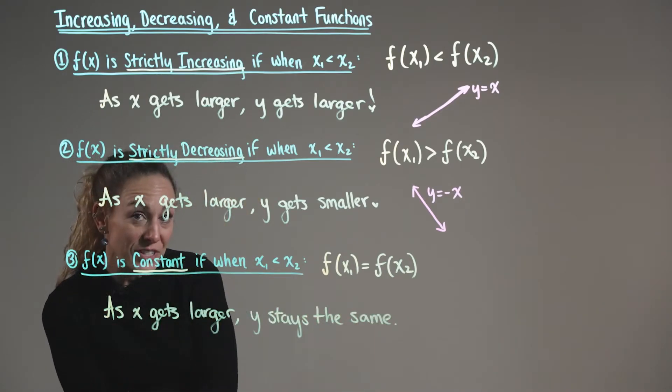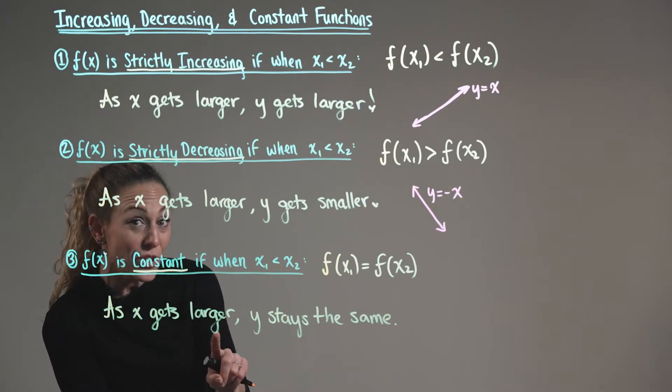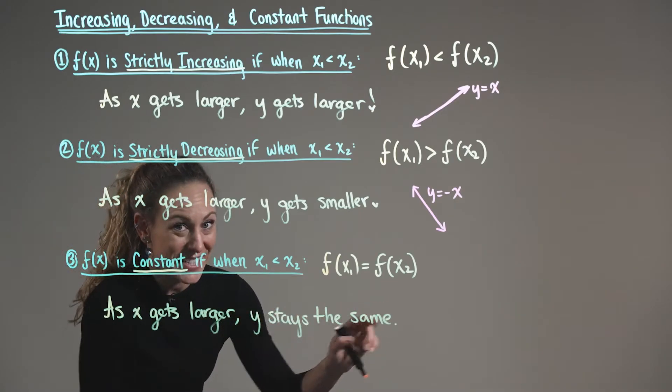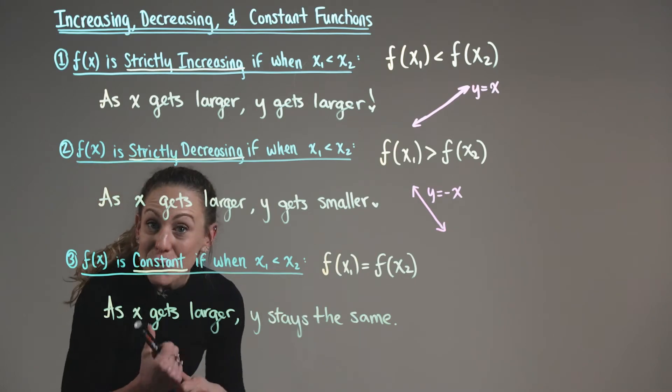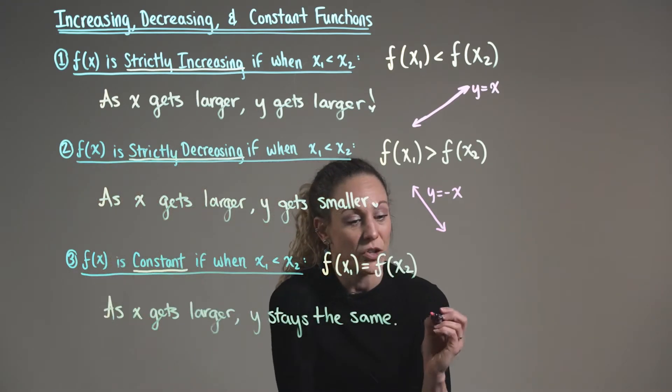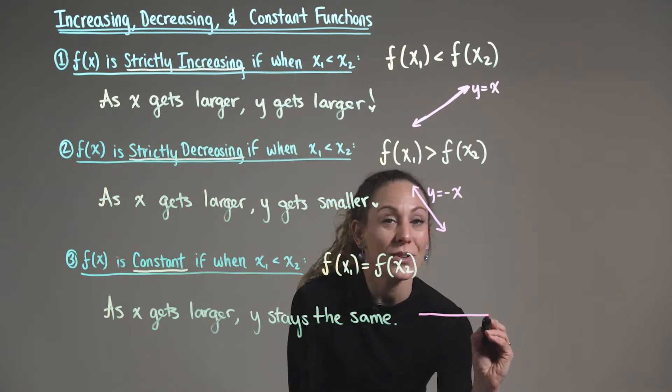So we can say a function is constant if as x gets larger, y stays the same. So a visual interpretation of a constant function would be a horizontal line.